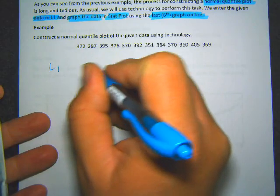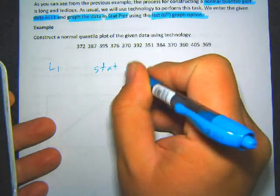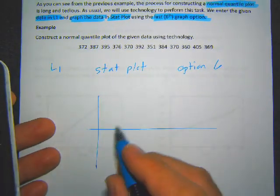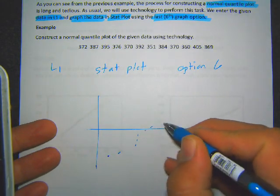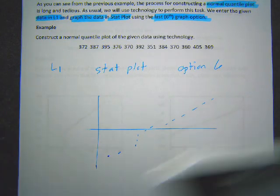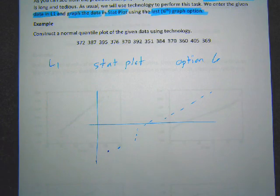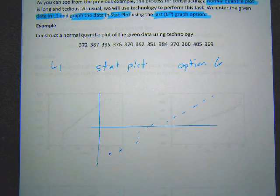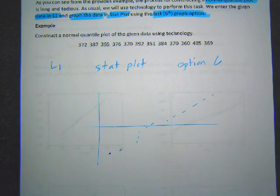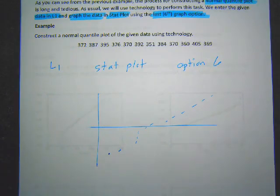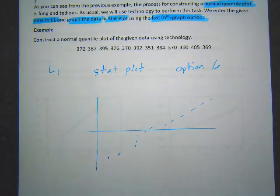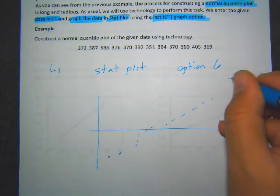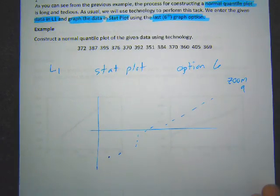After zooming with zoom stat, you'll see the normal quantile plot. This is what it looks like — all these values plotted out, and it has that basically straight line shape. That straight line shape is what we're really looking for. A nice straight line tells us the data is probably normal, that's a normal distribution. That's the basic shape you want to see.